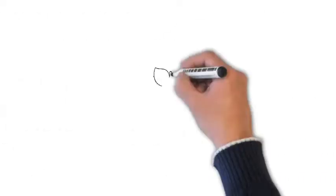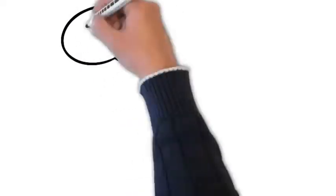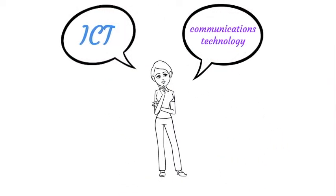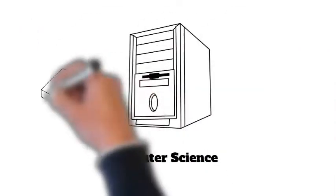Computer science and ICT are two different subjects but at the same time have many similarities. Computer science is more about how computers work and about programming.